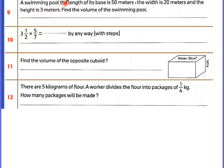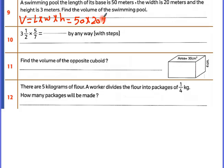A swimming pool has base length 50, width 20, and height 3. Volume equals length times width times height: 50 times 20 times 3. Two zeros stay as is: 5 times 2 is 10, times 3 is 30 — so the volume is 3,000 cubic meters.